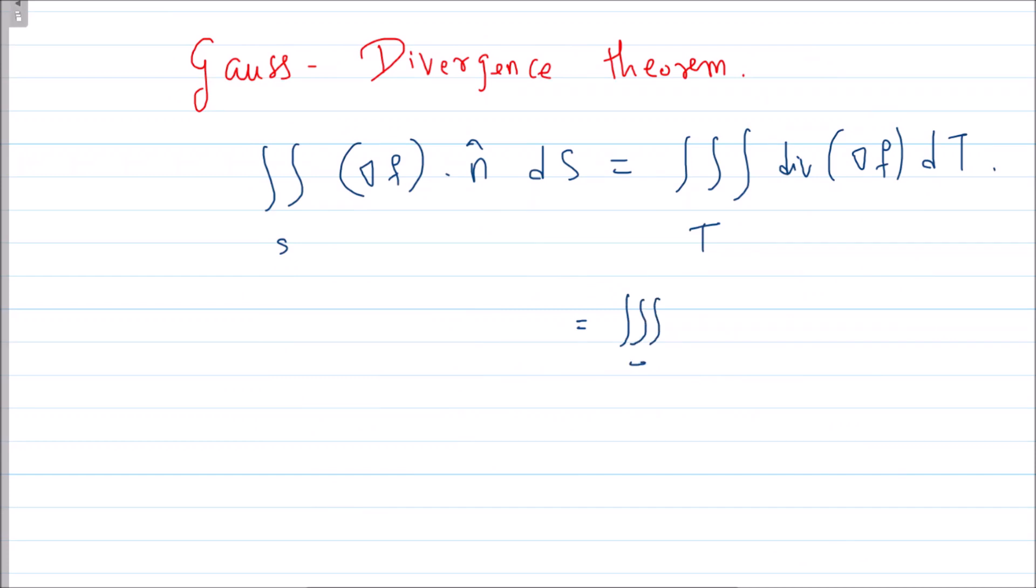So what is given to us? This triple integration T, this value is given to be 6, so 6 times dT. So 6 comes outside, triple integration T 1 times dT. Now we have seen earlier—I will post the link in the description—whenever the function is 1, triple integration is nothing but the volume of the surface.